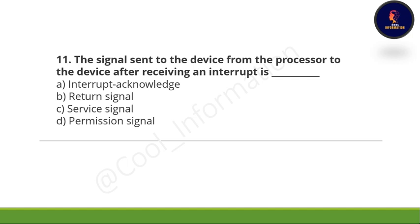Eleventh question: The signal sent to the device after receiving an interrupt is — option A, interrupt acknowledge; option B, return signal; option C, service signal; option D, permission signal. The correct option is option A, which is interrupt acknowledge.